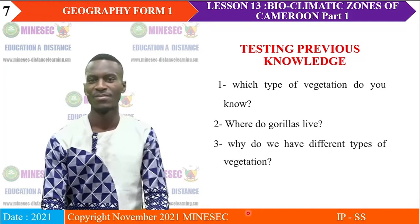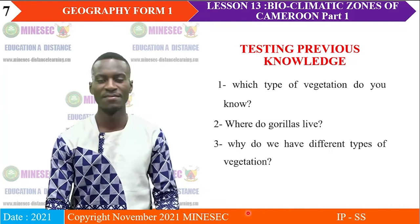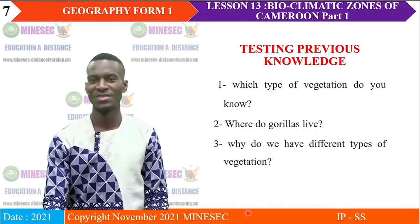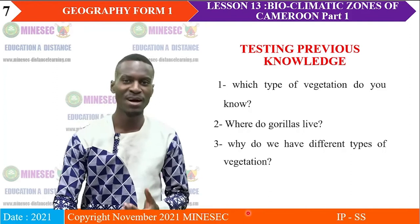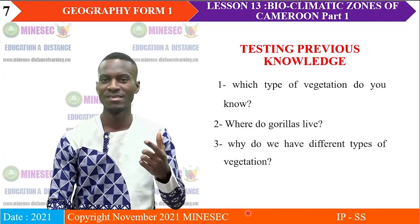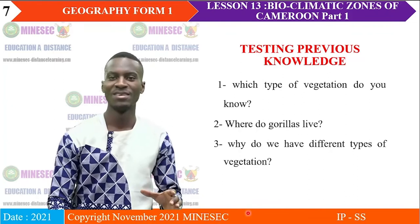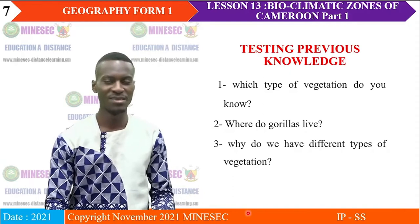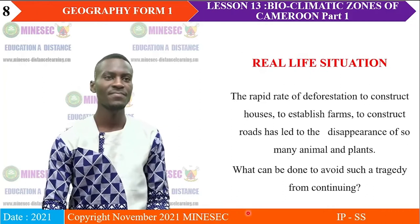Where do gorillas live? Where do elephants live? Where do giraffes live? Where do leopards live? And why do we have different types of vegetation? Remember in lesson one, you are supposed to ask yourself a question about what you see — you observe things: the vegetation, the animals, everything in nature. After, you ask yourself a question, for example, why do you have different types of vegetation? They are going to answer that in the course of their lesson.